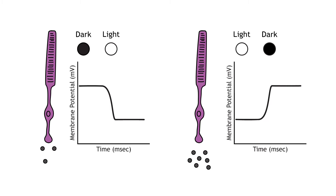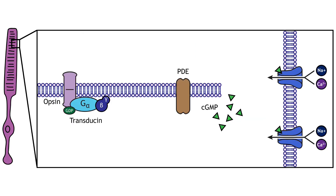In the graphs used in this lesson, the starting membrane potential will depend on the initial lighting condition. In the dark, the photoreceptor has a membrane potential that is more depolarized than the typical neuron — approximately negative 40 millivolts. Photoreceptors have open cation channels that allow the influx of sodium and calcium in the dark. These channels are gated by the presence of cyclic GMP, a molecule important in second messenger cascades that is present in the photoreceptor in the dark.